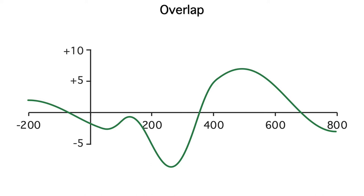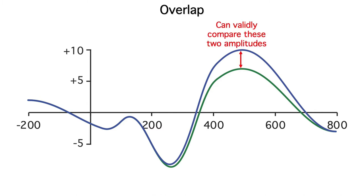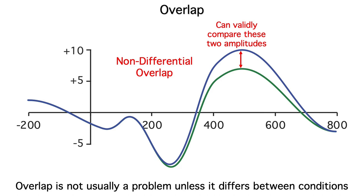Now this isn't necessarily a problem. If we're comparing two conditions, and the stimuli for the two conditions are presented in random order, the overlap in the baseline should be the same for both conditions. In this example, the overlap is the same for the green line and the blue line. As a result, any difference between the two conditions can't be explained by the overlap, and it would be perfectly valid to compare the ERPs in these two conditions. We call this non-differential overlap.